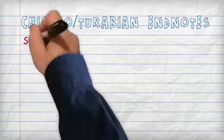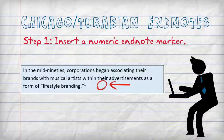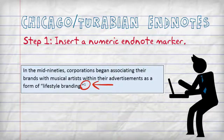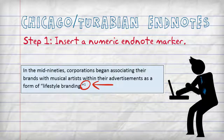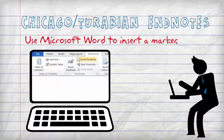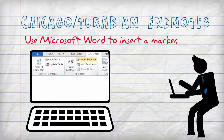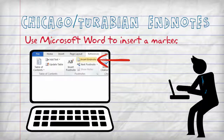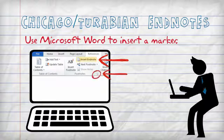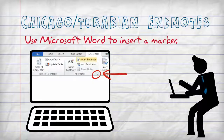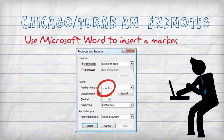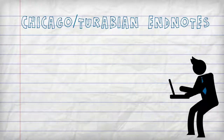Step 1. Insert a numeric endnote marker within your paper whenever you want to let your reader know you're going to cite a source. You can use Microsoft Word to insert a marker — click Insert Endnote on the References tab. Also, make sure you're using Arabic numerals, the normal ones, rather than Roman numerals.